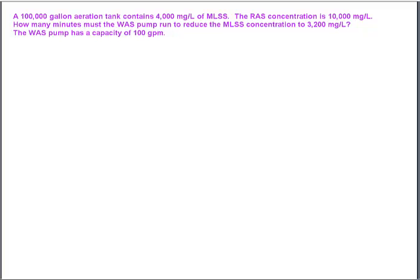What I'm going to do is figure out how many pounds of mixed liquor I actually want to remove from the system, and then I'm going to go backwards to figure out how many gallons I need to waste. We're actually going to use the pounds formula twice.